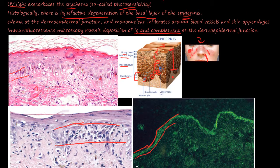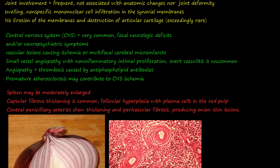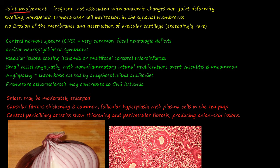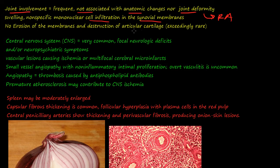So that's the liquefactive degeneration, edema, and mononuclear cell infiltration. Moving on — there is joint involvement in SLE, and it's frequent, but it's not associated with the anatomical joint deformity seen in rheumatoid arthritis. There is nonspecific mononuclear cell infiltration in the synovial membrane, but no erosion of the membranes or destruction of articular cartilage — and if there is, it's exceedingly rare.